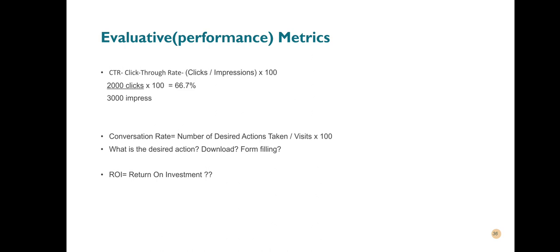One is the Click-Through Rate. The click-through rate is you trying to find out how many people are clicking on your advert out of the number of people who are seeing your ad. So if your ad says "click to join" or "click to go to our website," how many people are clicking on your ad? The click-through rate formula is: number of clicks divided by number of impressions, multiplied by 100. In the example, it is 2,000 clicks out of 3,000 impressions times 100, which gives a 66.7% click-through rate.